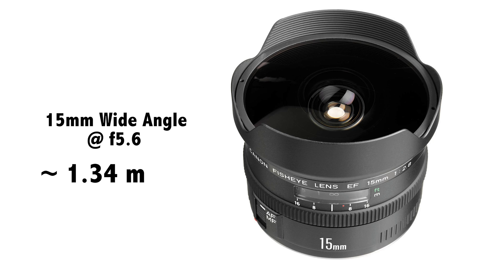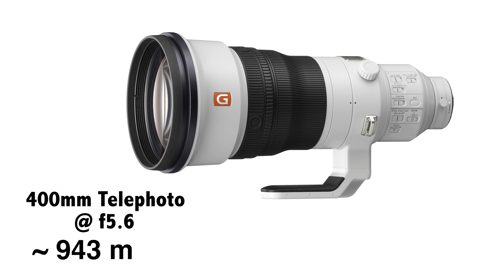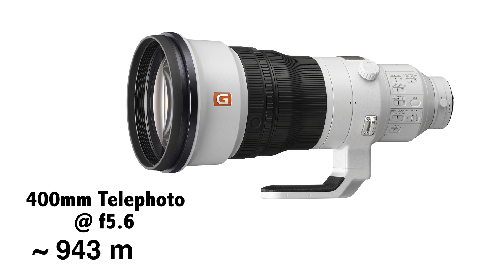As a rule of thumb, wide angle lenses have a much shorter hyperfocal distance than super telephoto zooms. For example, a 14 or 15 millimeter lens puts you looking at a couple of meters away, versus a 400 millimeter lens at f5.6, which is talking about close to a kilometer.